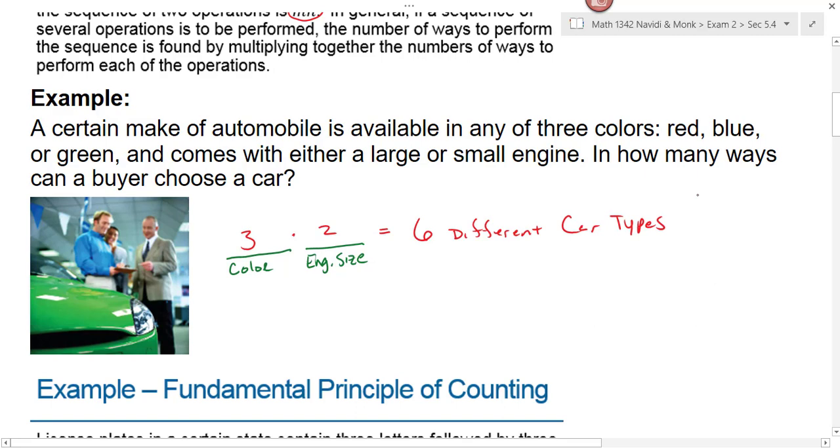So that means that we have a total of six different car types. Have y'all been to Sonic and seen their advertisement that says we have over 600,000 different types of drinks? That's because they have the choice of either having diet or regular, what kind of flavor do you want, do you want tea or soda. And when you multiply all those different things together, that's how you come up with the 600,000 something choices that they have. Sounds impressive, but it's really not.